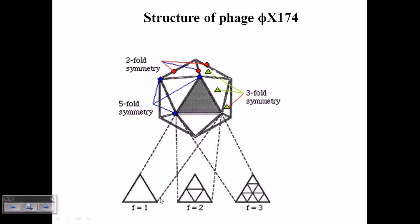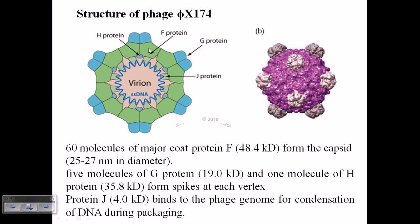60 molecules of major coat protein F (48.4 kD) form the capsid, which usually has a diameter of 25 to 27 nanometers. Five molecules of G protein (19.0 kD) and one molecule of H protein (35.8 kD) form spikes at each vertex.